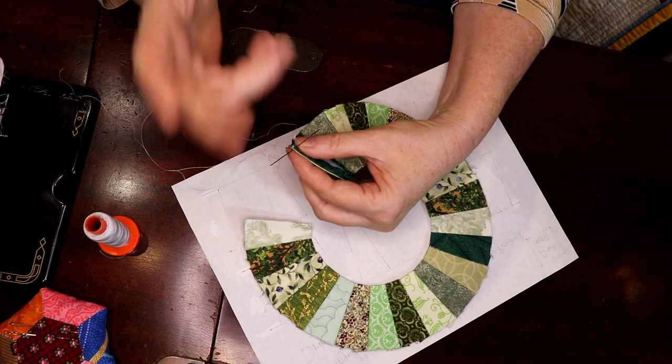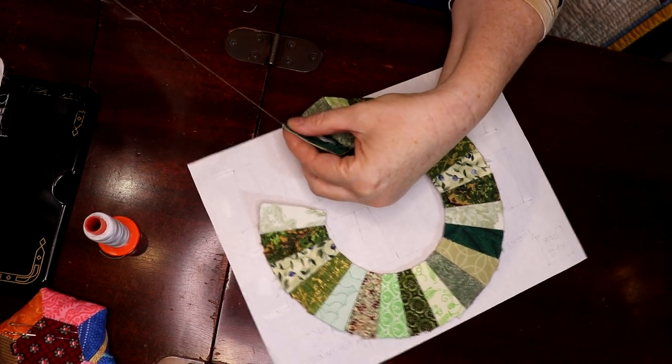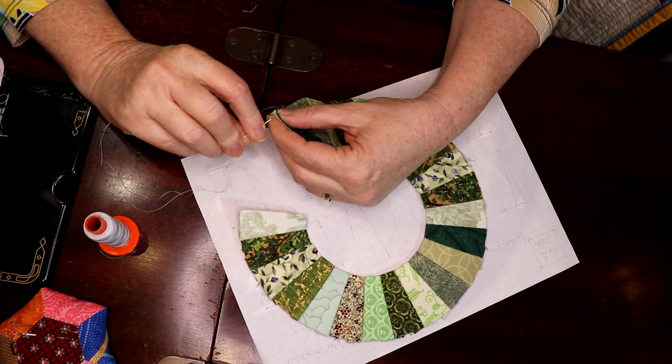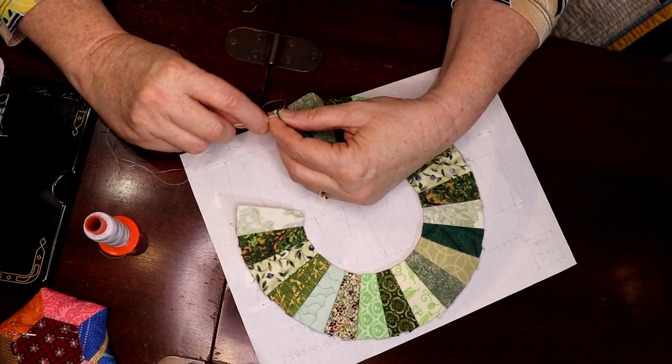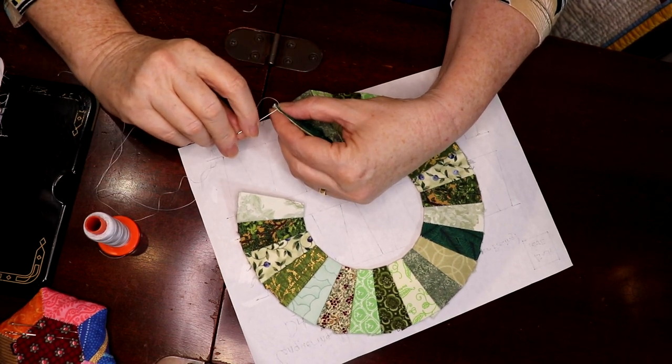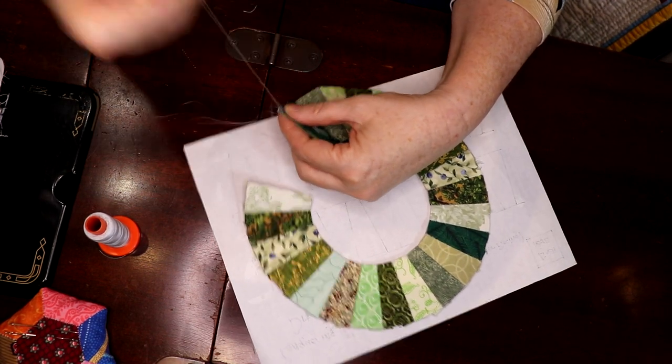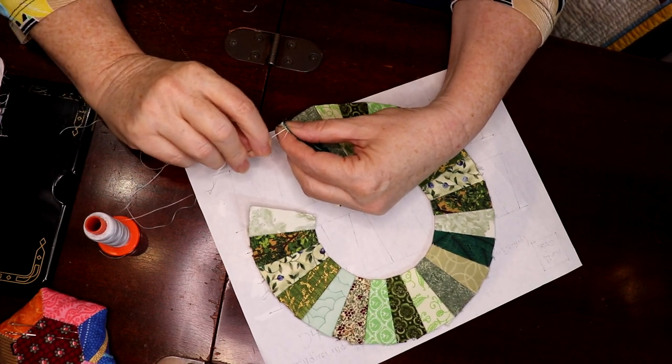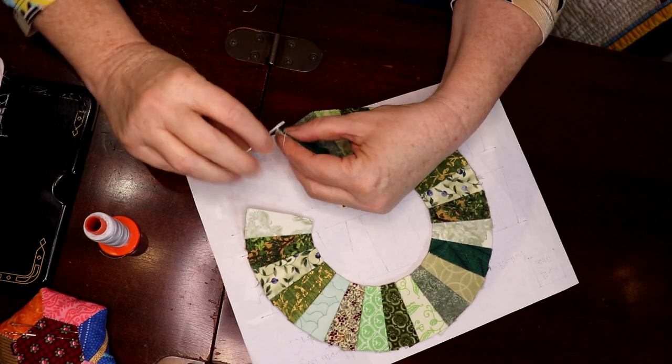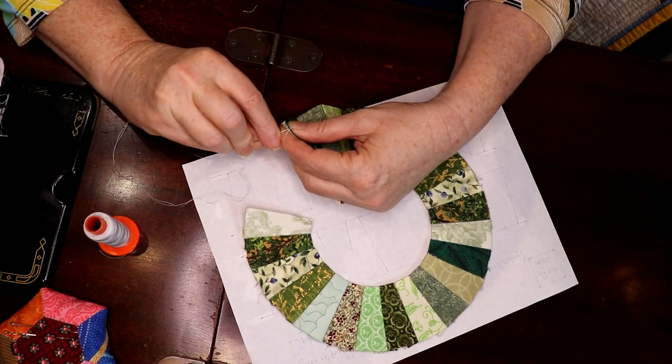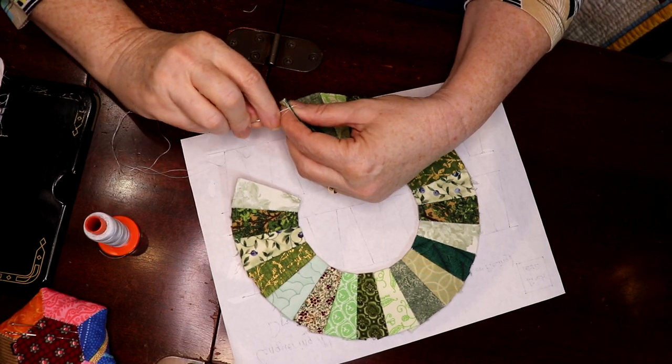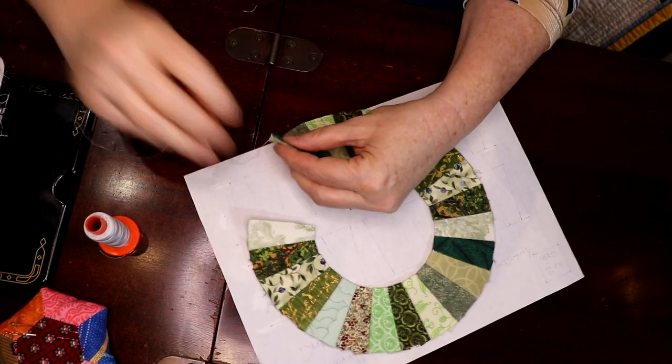And what you're trying to do is only pick up the cloth. You're not picking up the freezer paper inside. So you're just doing this, and I picked up a little freezer paper there. You can feel it with your needle. If your needle is really sharp, you might puncture the freezer paper, but basically you want to pick up a couple of threads on each side.